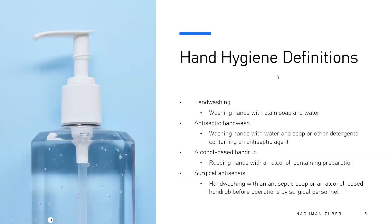Hand hygiene is very, very essential. Hand washing — washing hands with plain soap and water. Then the antiseptic hand wash — washing hands with water and soaps or other detergents containing an antiseptic agent. Then the alcohol-based hand rub — rubbing hands with an alcohol-containing preparation. Surgical antiseptics — hand washing with an antiseptic soap or an alcohol-based hand rub before operations by surgical personnel.